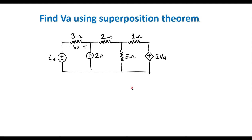In this video, I will consider one numerical on superposition theorem. We need to find VA, that is the voltage across the 3 ohm resistor, using superposition theorem. This is the given circuit.